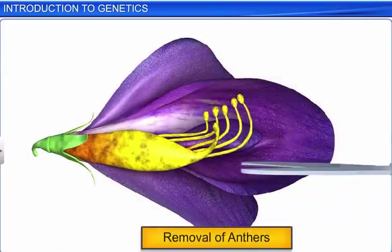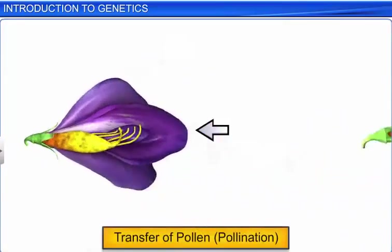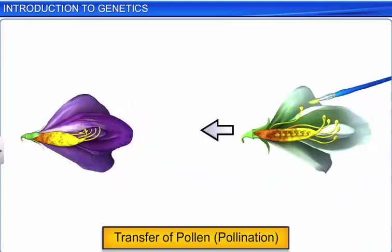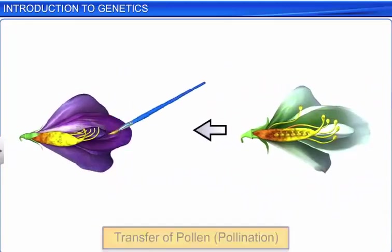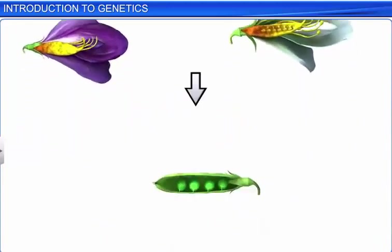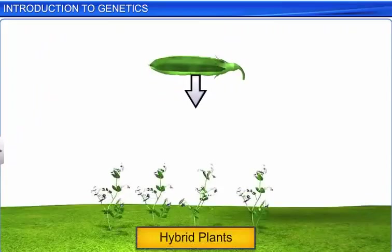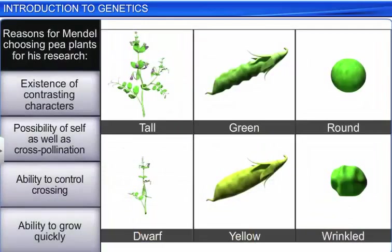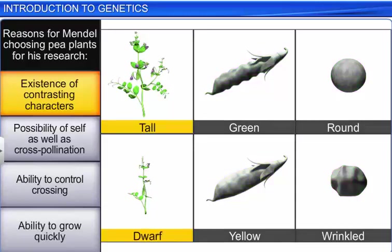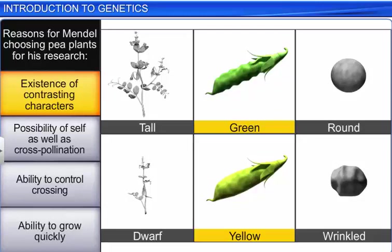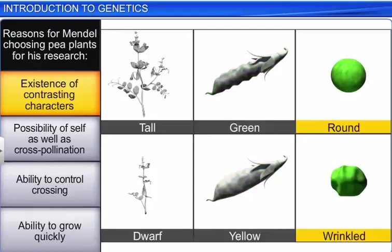Hybridization is the process of crossing two individuals differing in at least one character, resulting in a hybrid individual. The reason for Mendel choosing common pea plants for his research was that the plant had various contrasting characters such as length of the plant, color of the pod, and shape of the seed that were visible to the naked eye.